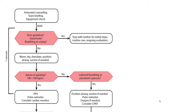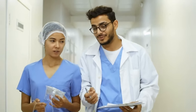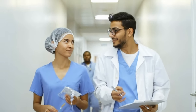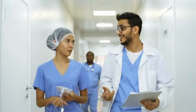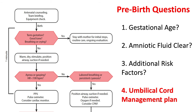Let's look at the top part of the new NRP algorithm. We will start off with the 4 pre-birth questions that we need to ask the obstetric provider. These 4 pre-birth questions will guide us with our equipment and manpower preparation: gestational age, amniotic fluid clear, additional risk factors, and umbilical cord management plan. The umbilical cord management plan has been added to the 4 pre-birth questions, replacing 'how many babies.'